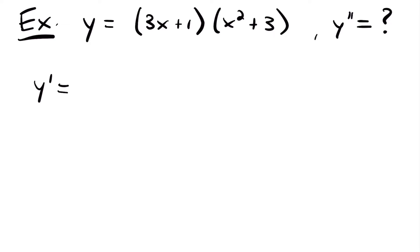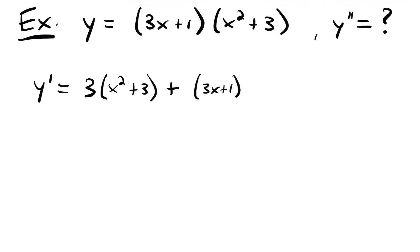y prime, our first derivative, is equal to the derivative of our first function, 3x plus 1, which is 3, times our original second function x squared plus 3, plus the original first function 3x plus 1 times the derivative of our second function, which is 2x. The derivative of x squared is 2x and the derivative of 3 is 0, so it's just 2x. And now we can simplify.